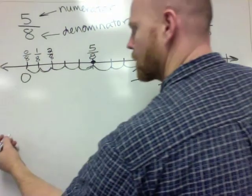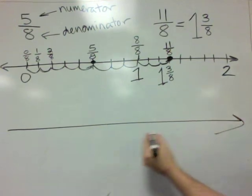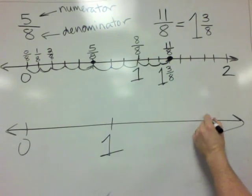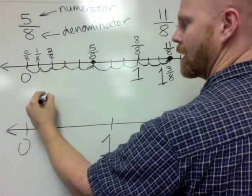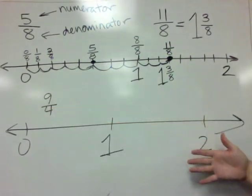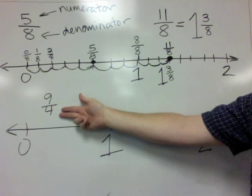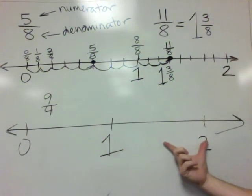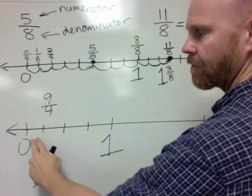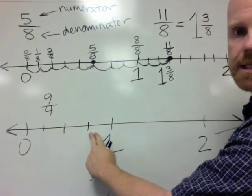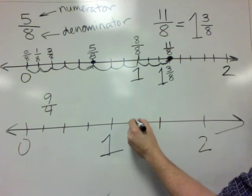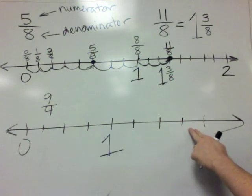Let's do one last example. Here's a number line. Let's call this 0, 1, 2. And let's talk about the fraction 9/4. So where does the fraction 9/4 live on this number line? Well, what does the 4 mean? It means each whole number is cut into four equal-sized pieces. Cut it in half, and cut each one of those in half. We now have four equal-sized pieces. We're going to do the same thing over here. Cut it in half, cut each of those in half. We now have four equal-sized pieces over here.